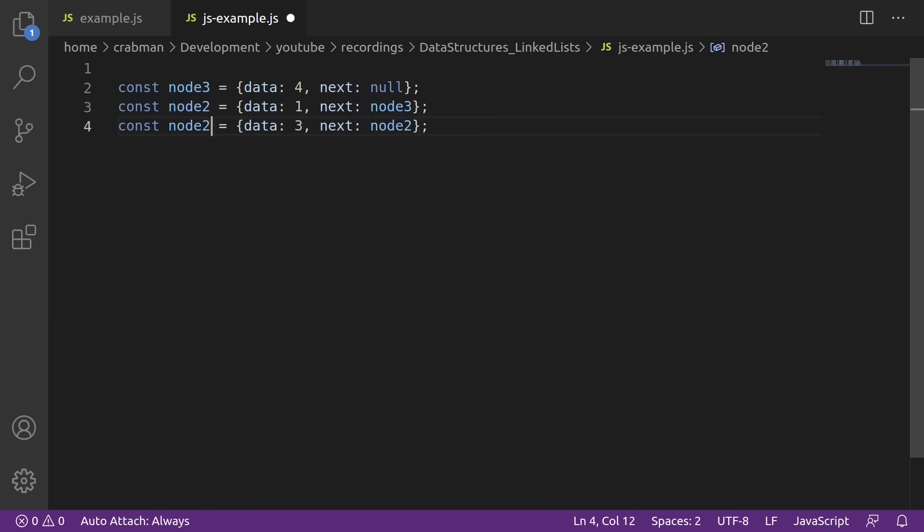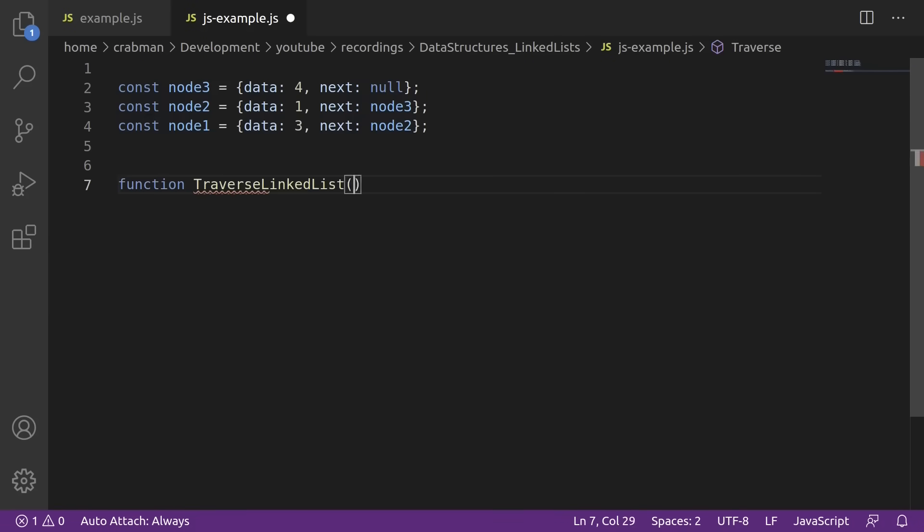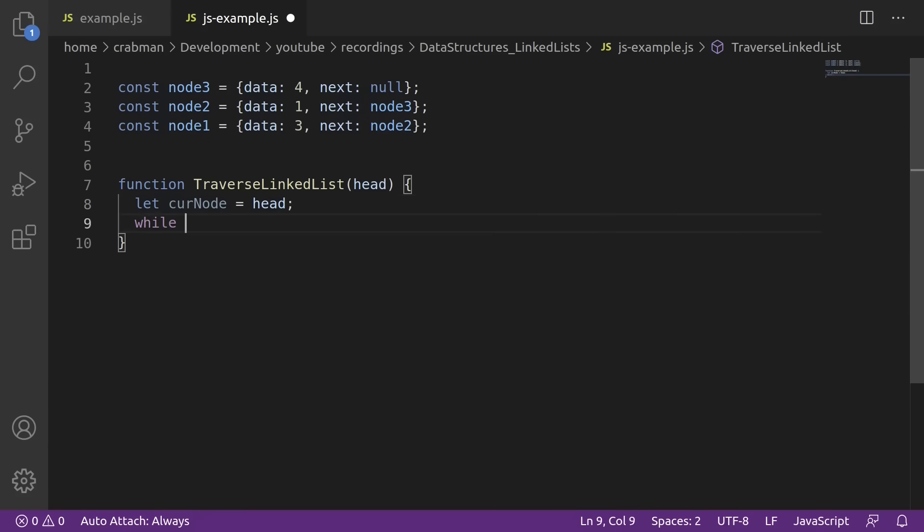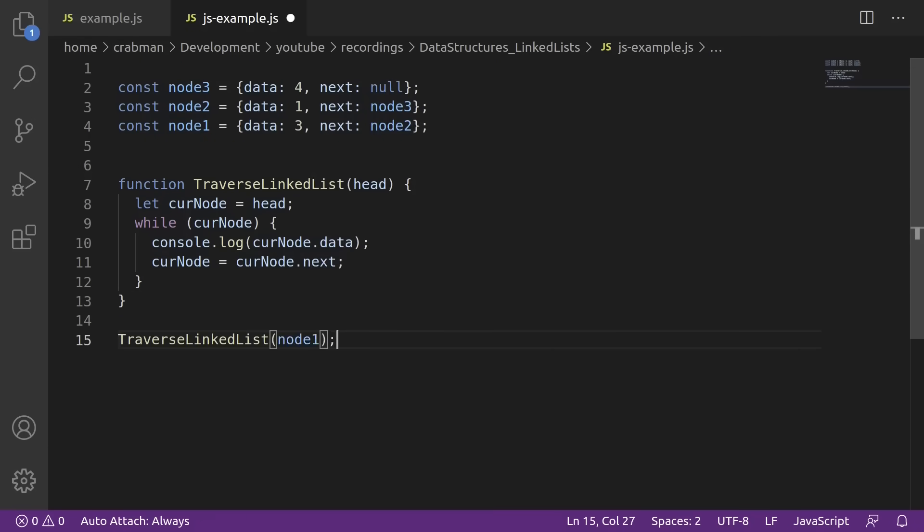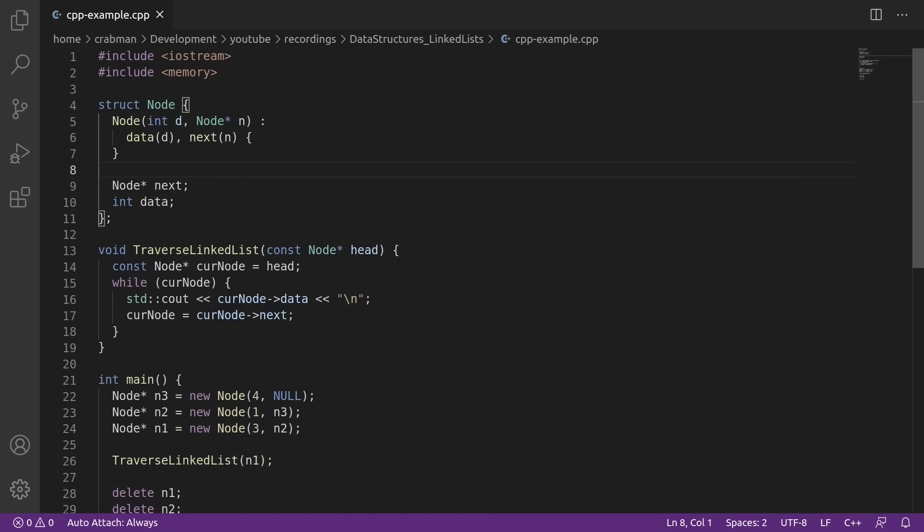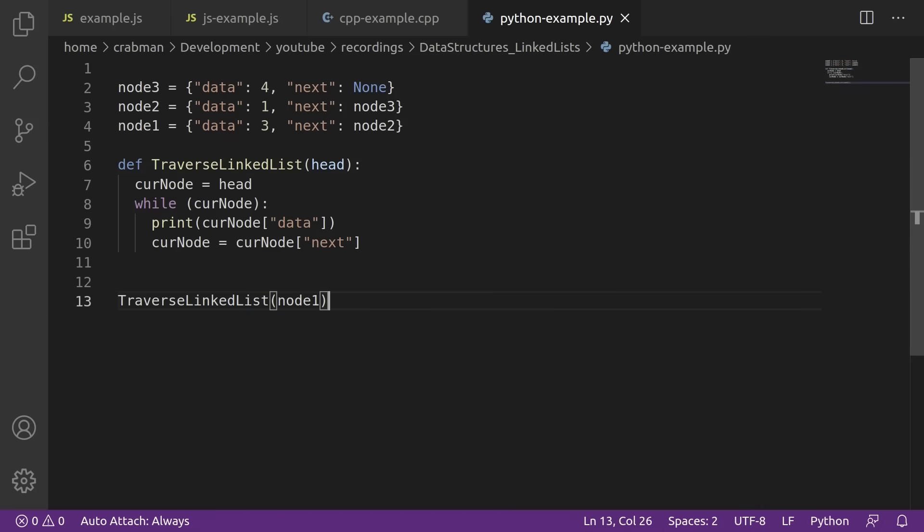The code will look something like this. So beginning at the head node, we'll have a loop where we assign curnode equals curnode.next, and then we terminate the loop if curnode is null, meaning we've gone off the end. And as you can see, here's the C++ version, here's the Python version. They're all basically the same thing, a simple loop with some checks.